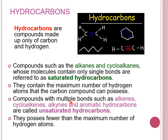Compounds with multiple bonds — for example, alkenes, cycloalkenes, alkynes, and aromatic hydrocarbons — are called unsaturated hydrocarbons because they possess fewer than the maximum number of hydrogen atoms.